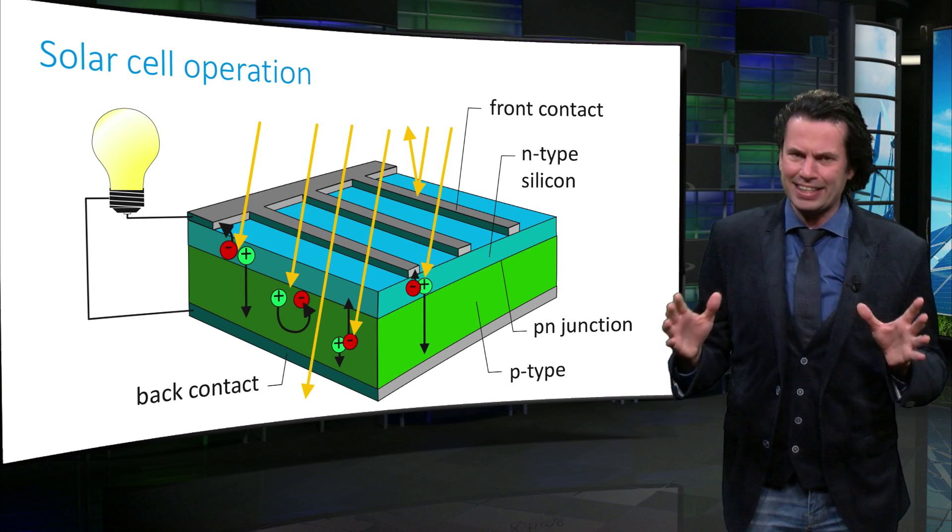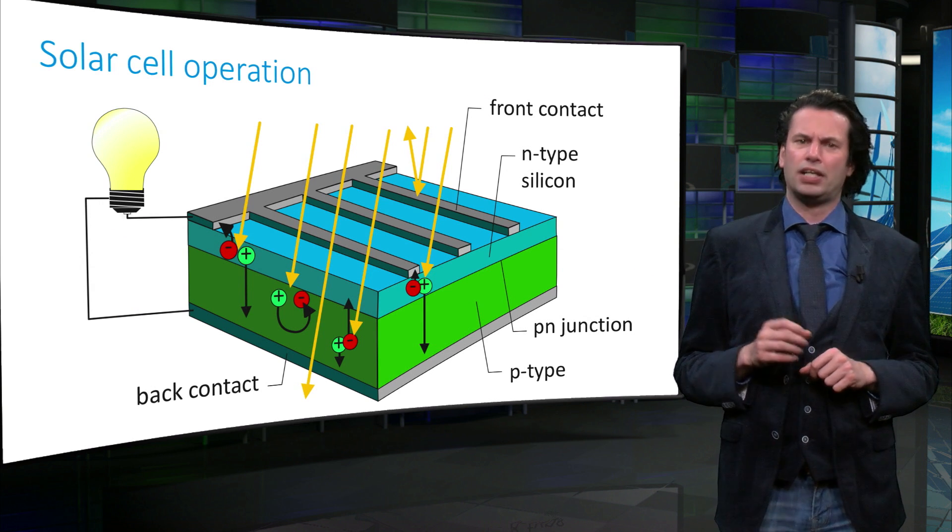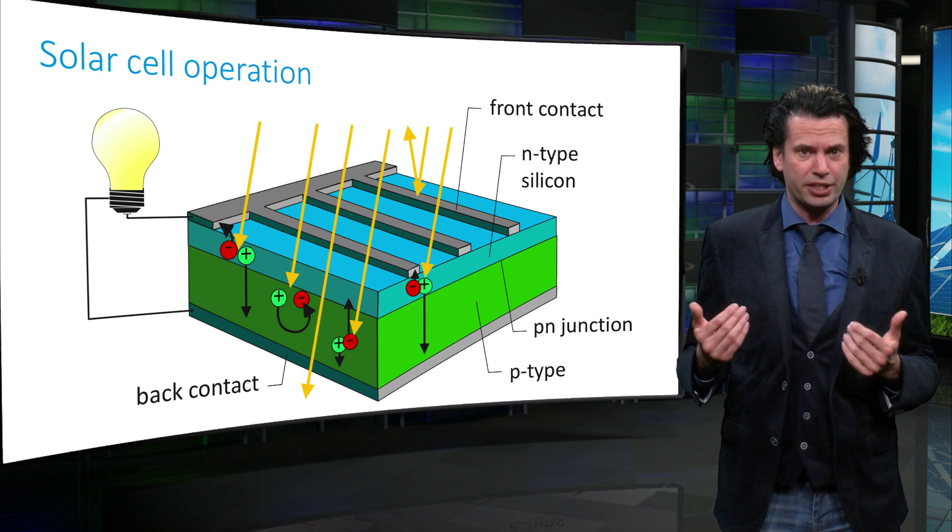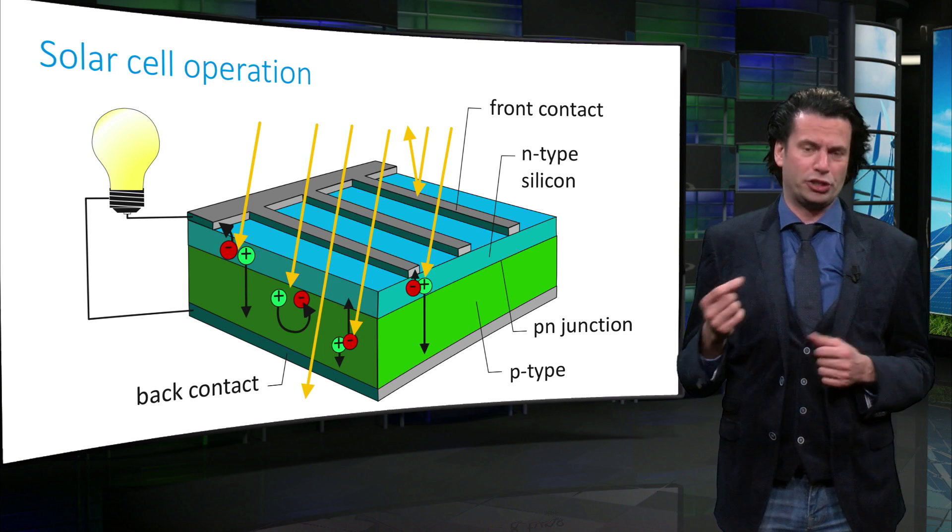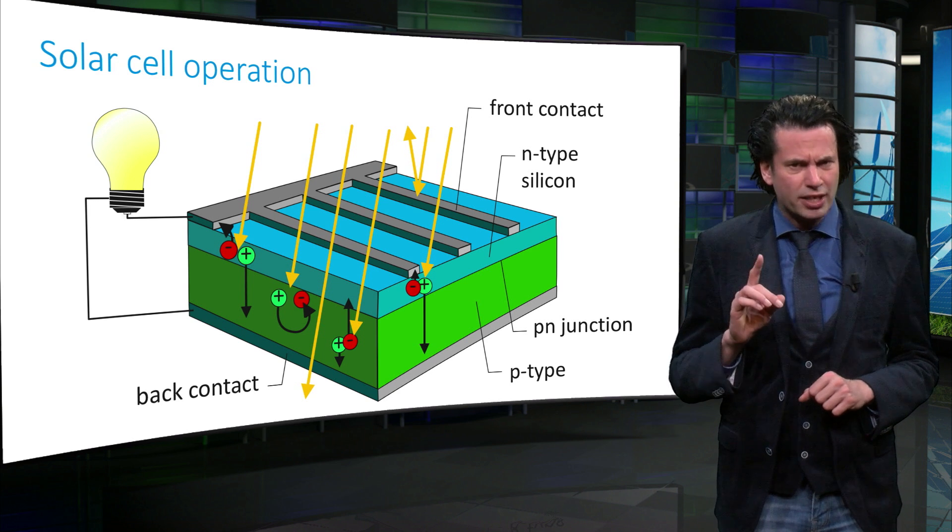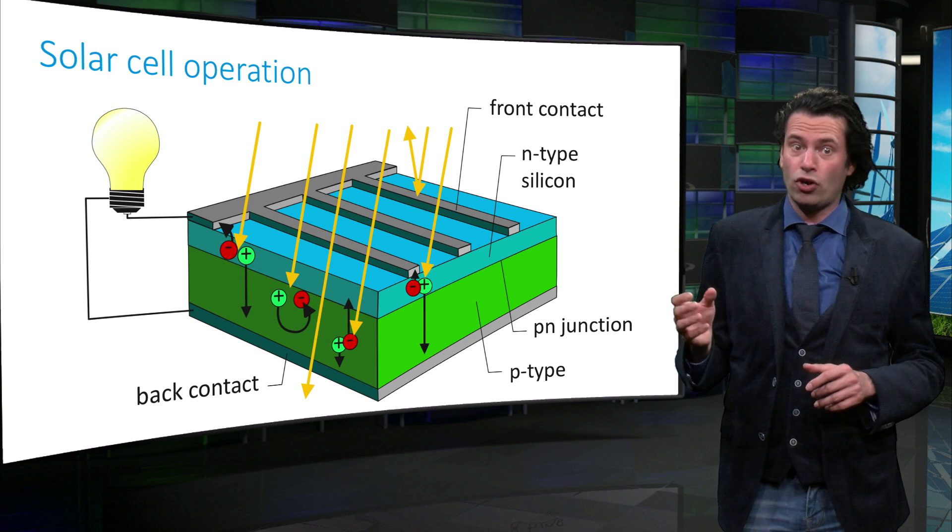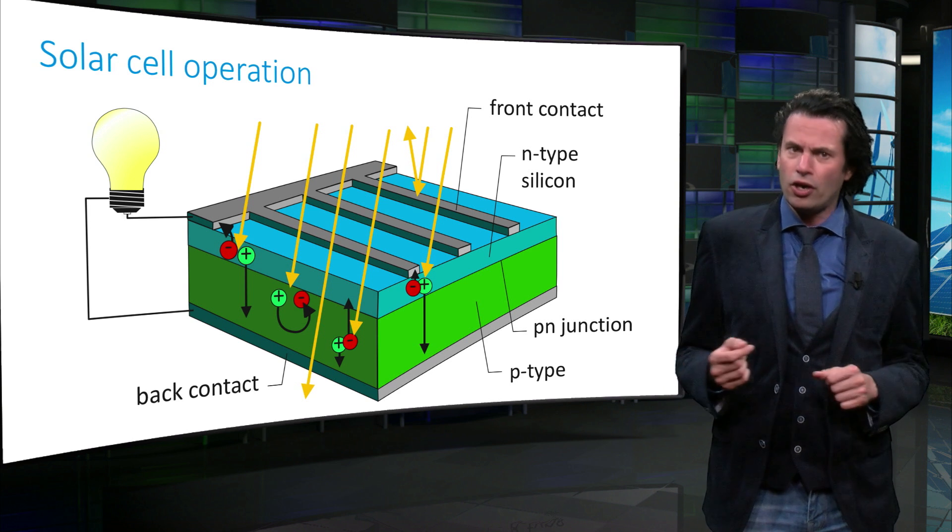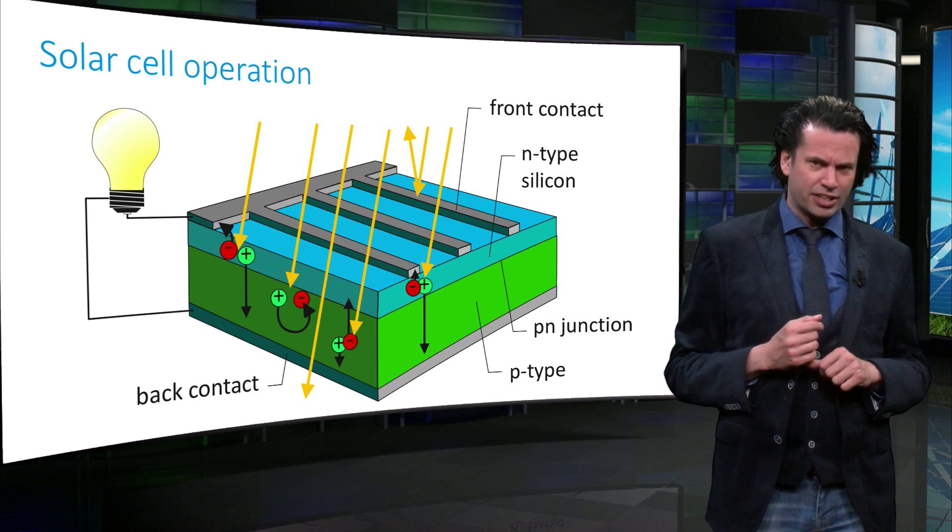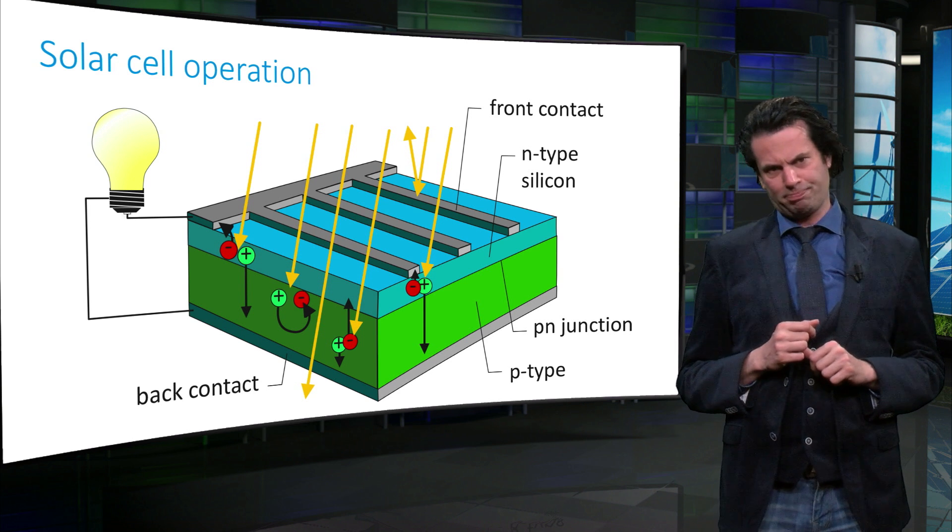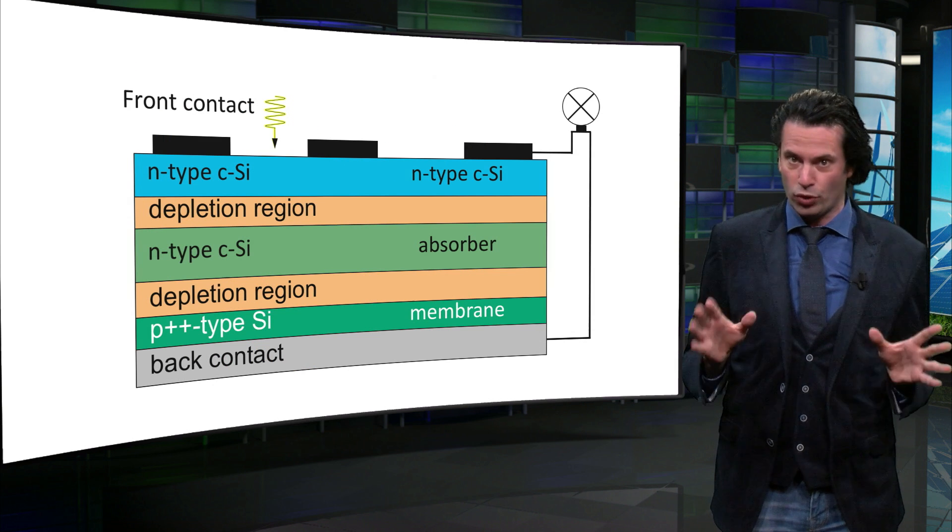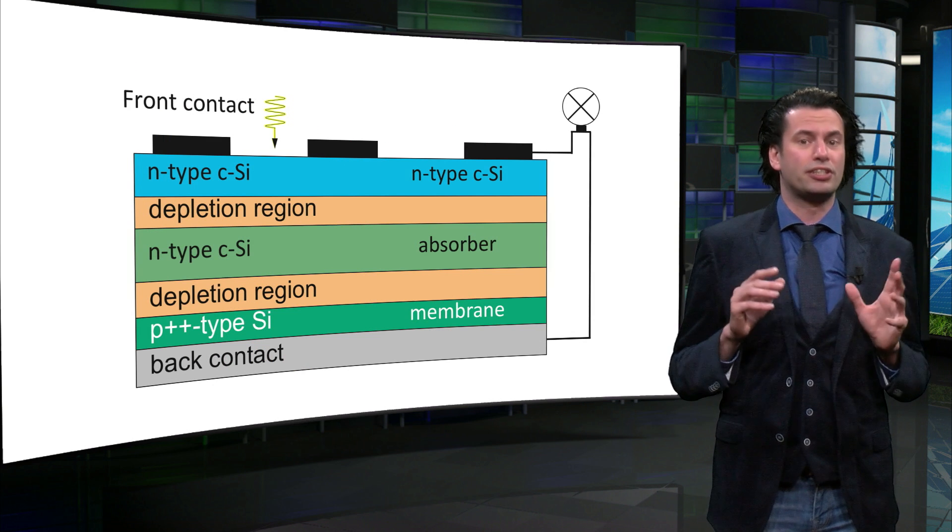So how can we get electricity directly from sunlight? The mechanism in which solar light is directly converted into voltage or current is called the photovoltaic effect or in short PV. Here we see a simplified representation of a silicon based solar cell. To give you a first idea how the PV effect works, I will show its principle using this simple animation.